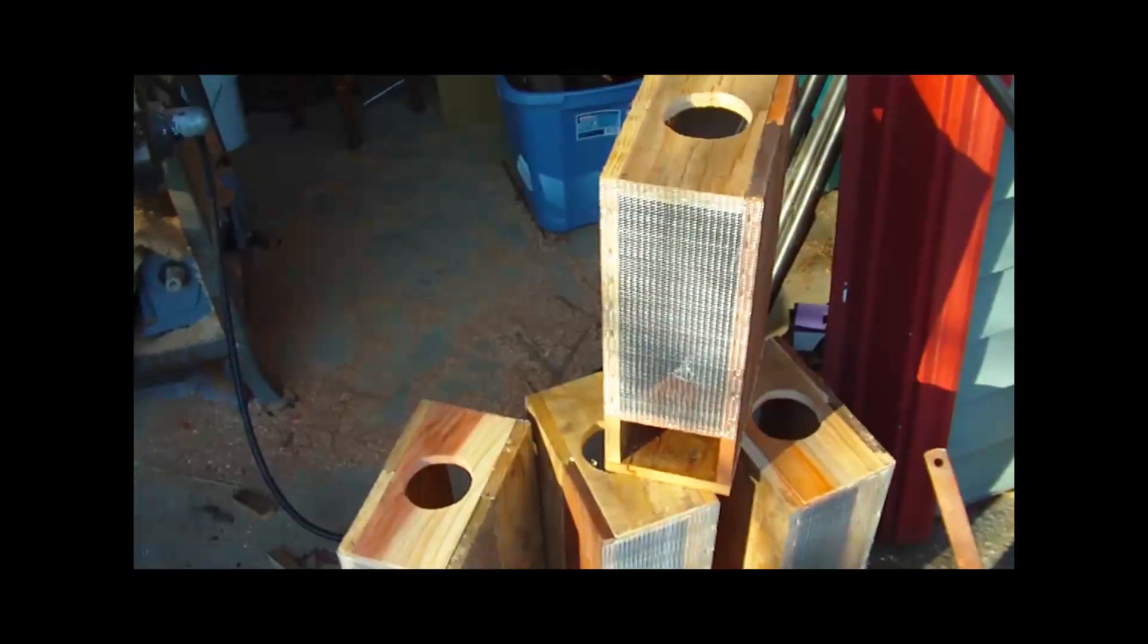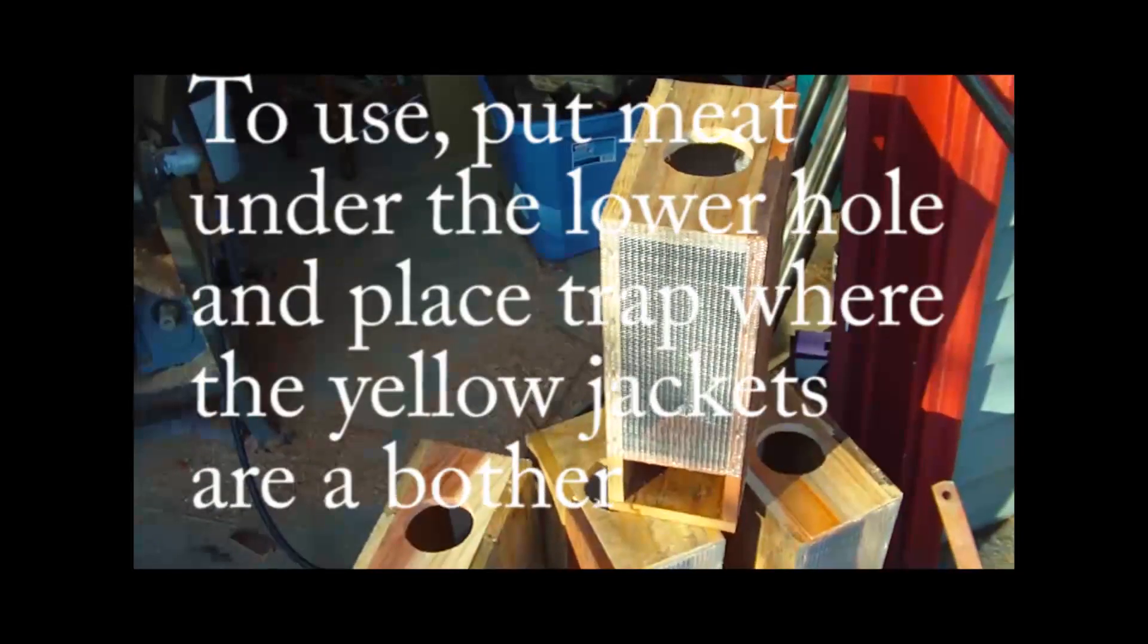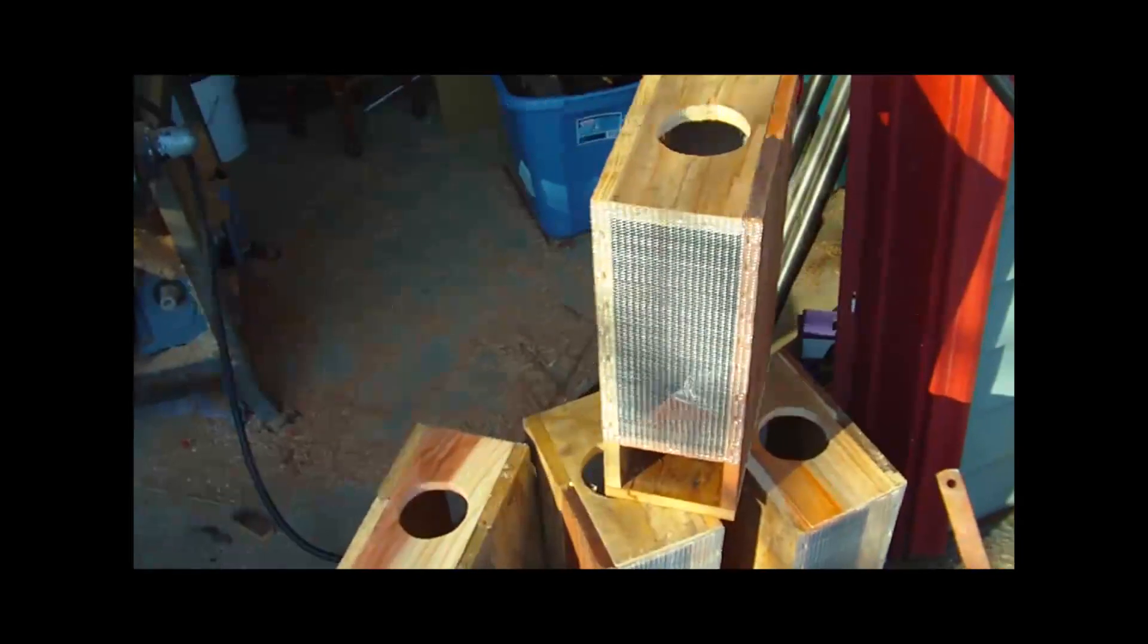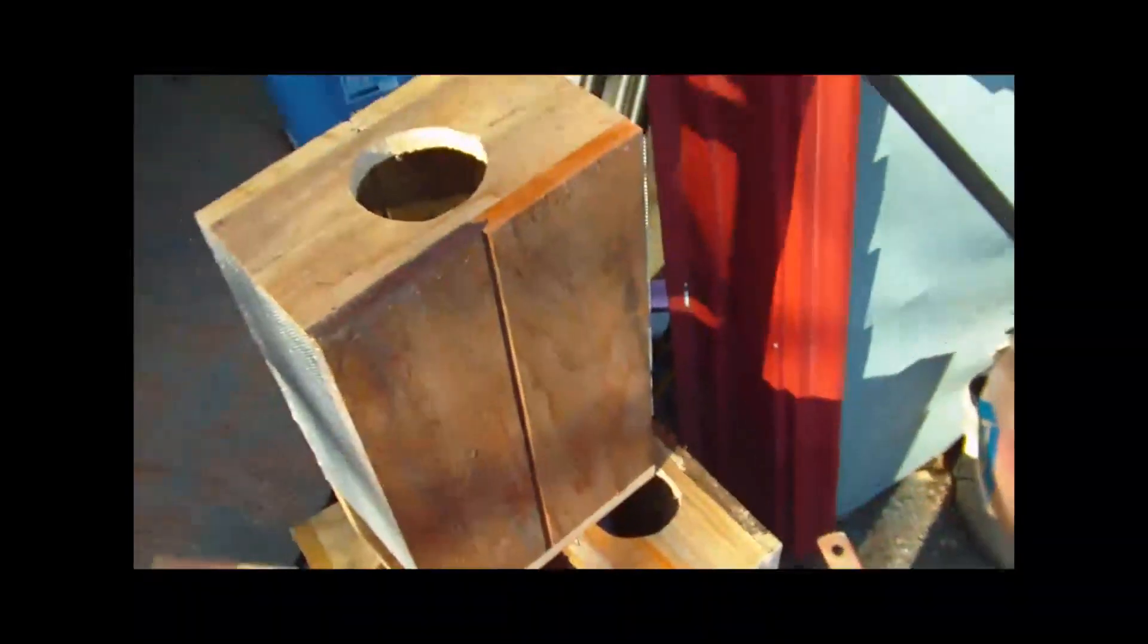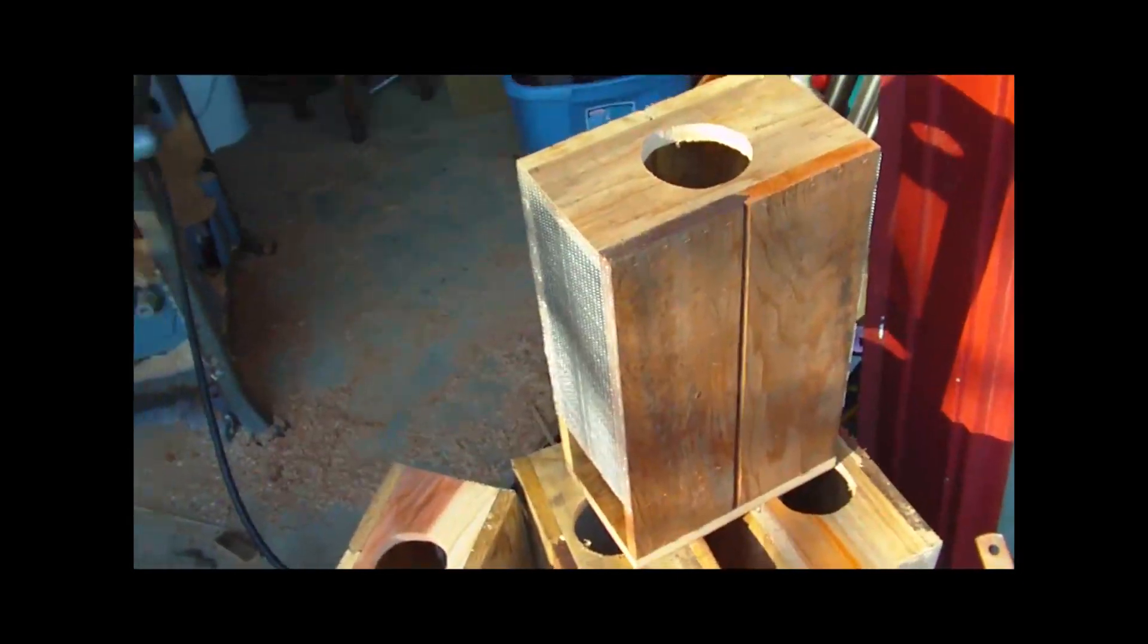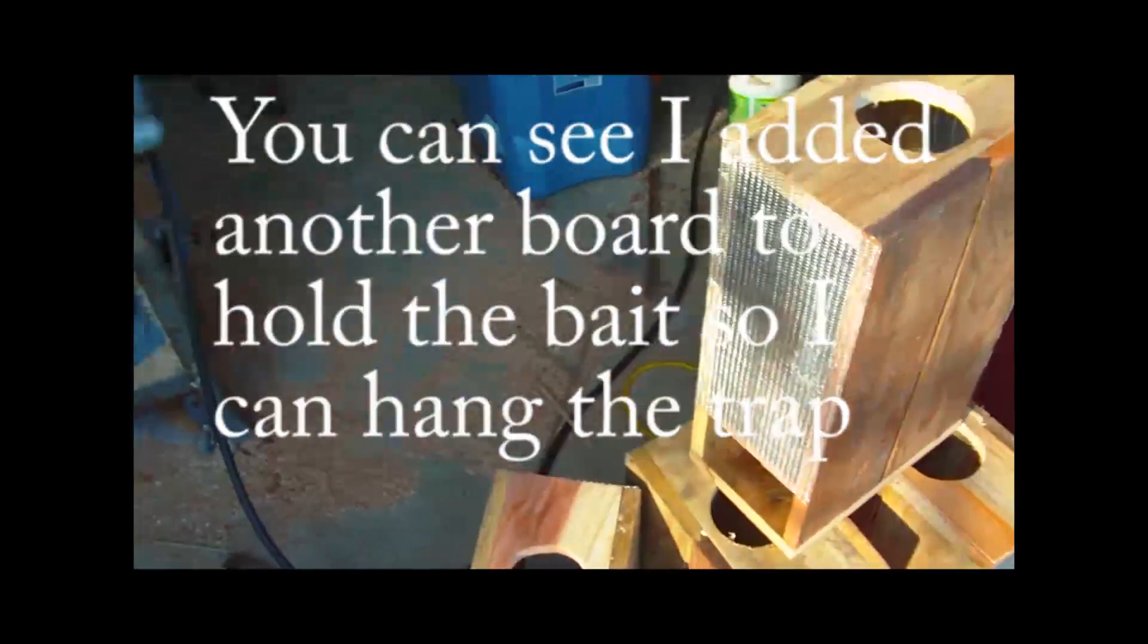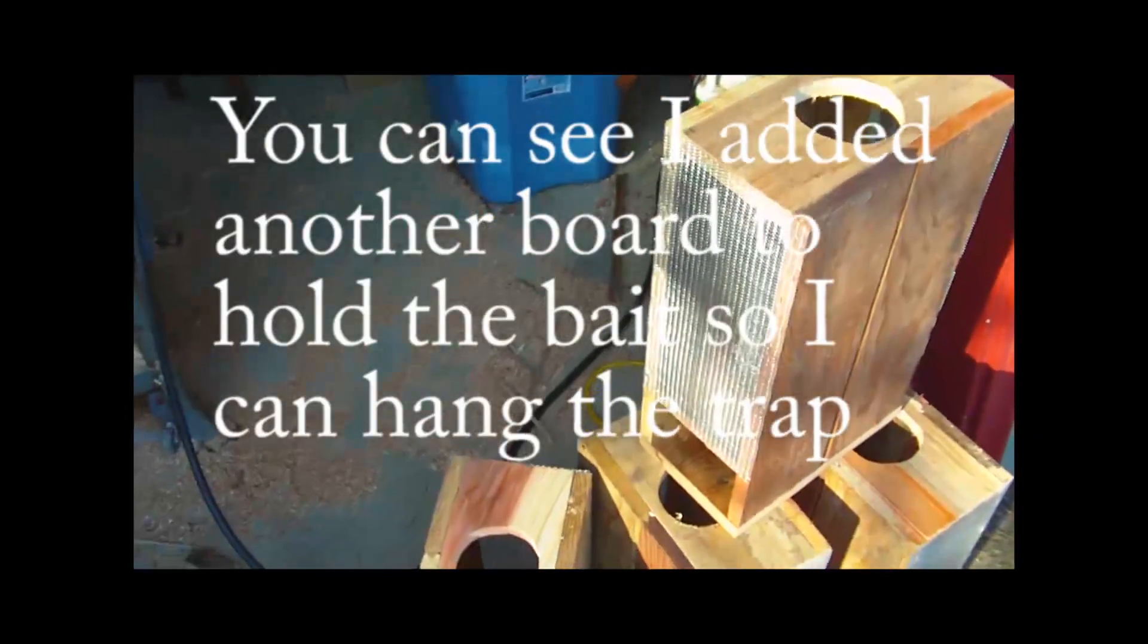So here are the finished traps. If I was to do it over again, and I had other material, I would actually put the wood on the short side here and put the screen on this side. But I made this completely with materials I had laying around, and the screen I had was only this wide, about six inches, and so that's why I made the boxes that way.